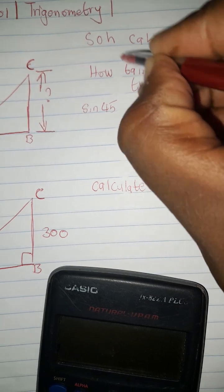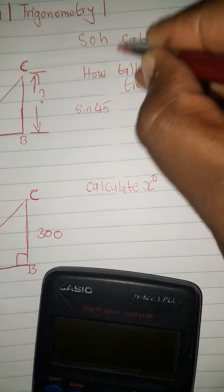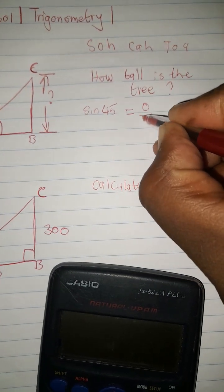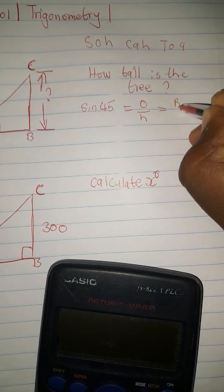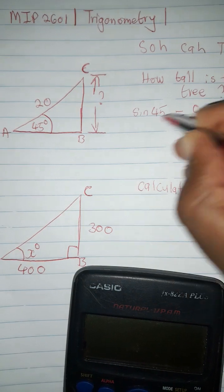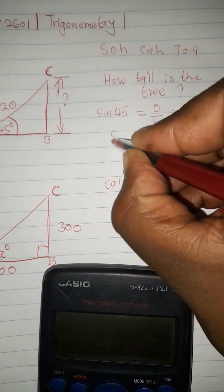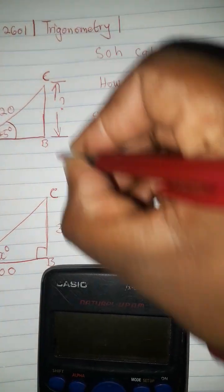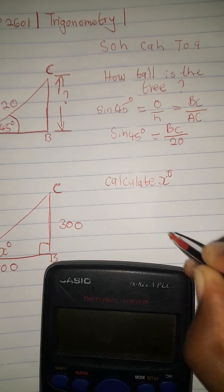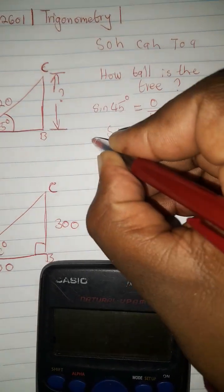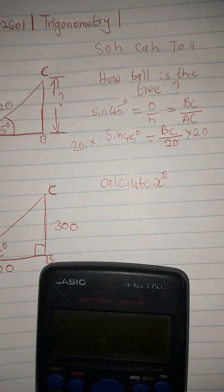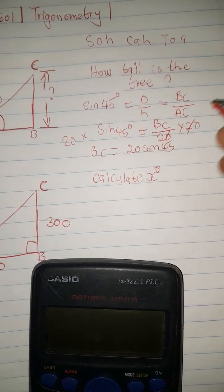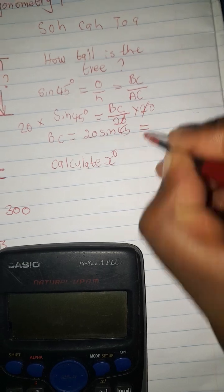SOH: Sine = Opposite over Hypotenuse. CAH: Cosine = Adjacent over Hypotenuse. TOA: Tan = Opposite over Adjacent. So we have sine 45°, which equals opposite over hypotenuse. Our opposite side is BC — the one we're looking for — divided by the hypotenuse AC, which is 20. We multiply both sides by 20 to make BC the subject, so BC = 20 × sin 45°.